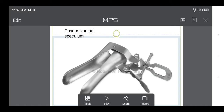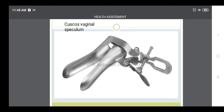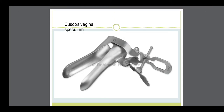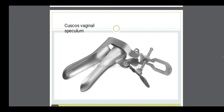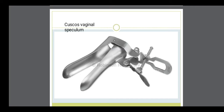I had shown one instrument called the SIM speculum, which was used to examine the cervix and also to measure the length of the uterus. This is another speculum called the Cuscus speculum. It is a self-retaining speculum, also used for the examination of the cervix and to measure the size of the uterus. The advantage of the Cuscus is that you don't have to hold it by hand for too long and detailed examination is possible.